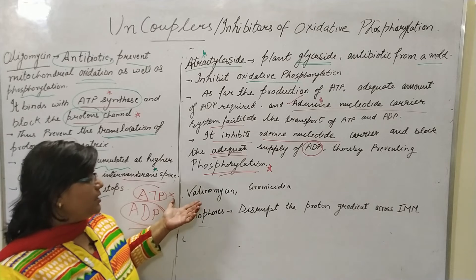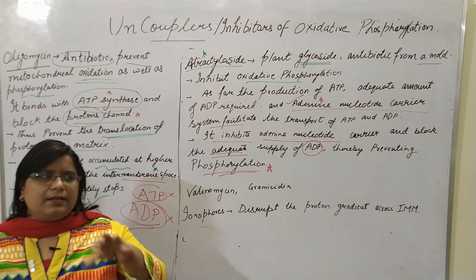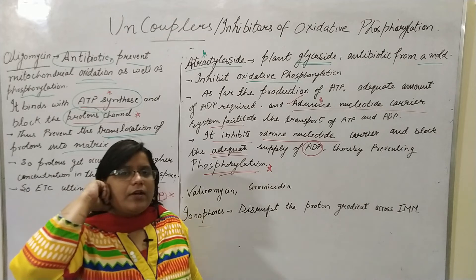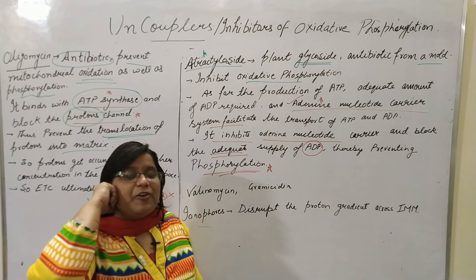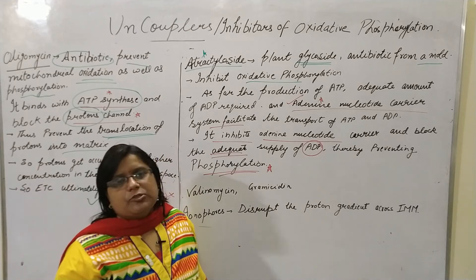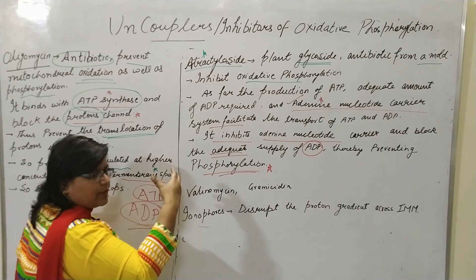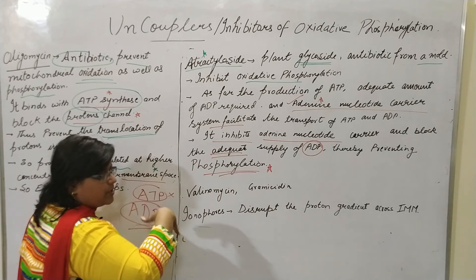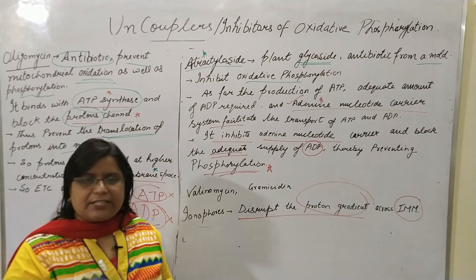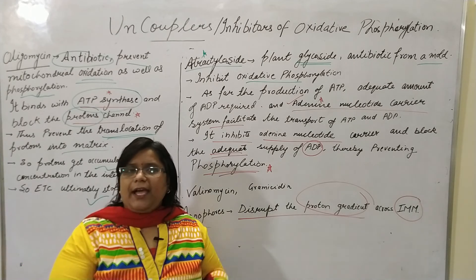Other antibiotics such as valinomycin and gramicidin are also present, which can inhibit phosphorylation. These are ionophores. Some classify ionophores as uncouplers and some as inhibitors of the electron transport chain — there is some controversy, but they can be included in uncouplers. Ionophores, as the name suggests, are linked with ion translocation. They disrupt the proton gradient across the inner mitochondrial membrane, and by disrupting or interrupting the proton gradient, they act as inhibitors.